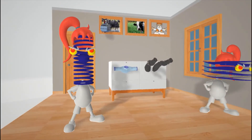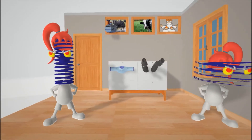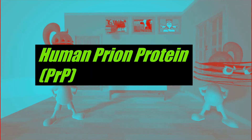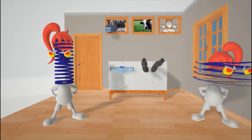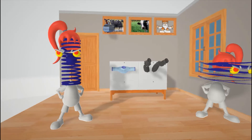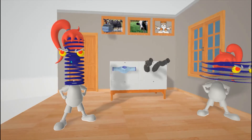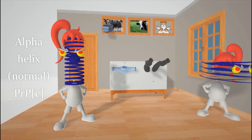In this scene we're going to talk about diseases caused by prions. The human prion protein is a protein that's 253 amino acids long. In prion diseases there's a misfolding of this protein. Normally it's in its alpha helix form — that's its normal form. This is the PRPC.